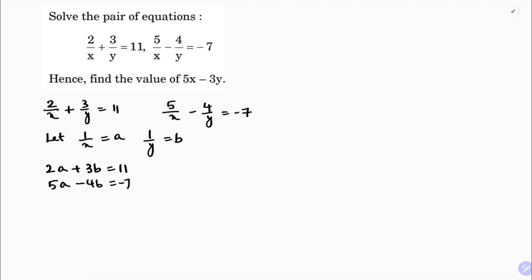Now I will eliminate these two equations. First one I will multiply with 4, second one with 3, making the coefficients of b equal. Multiplying: 8a + 12b = 44, and 15a - 12b = -21.